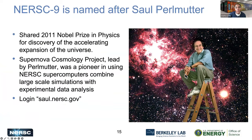NERSC-9 is Perlmutter. It is named after Saul Perlmutter, who won the Nobel Prize in Physics in 2011 for discovering the constant at which the universe was expanding. Saul had one request — making sure that his first name could be a login node — so one of the nodes is saul.nersc.gov.